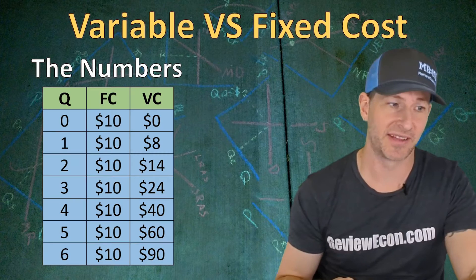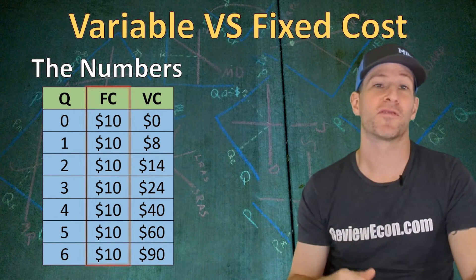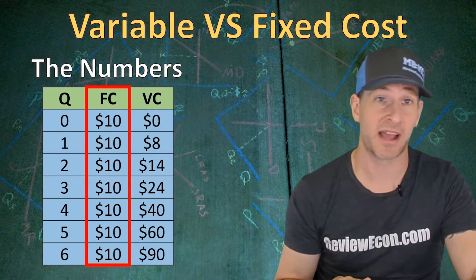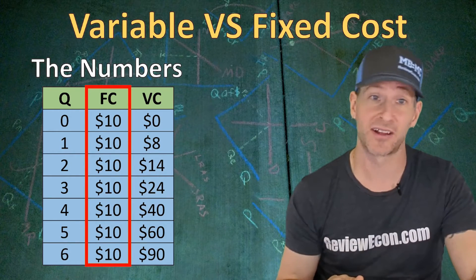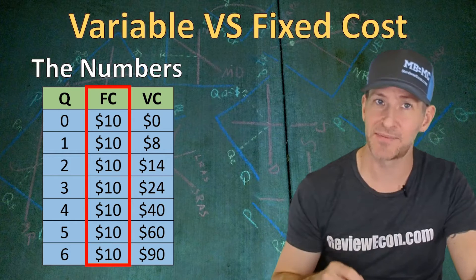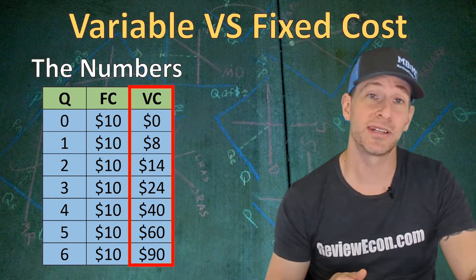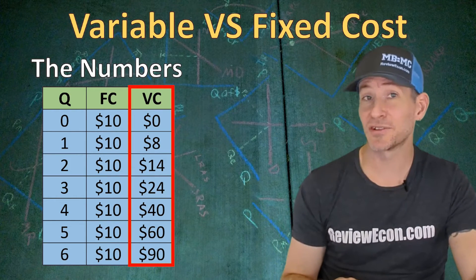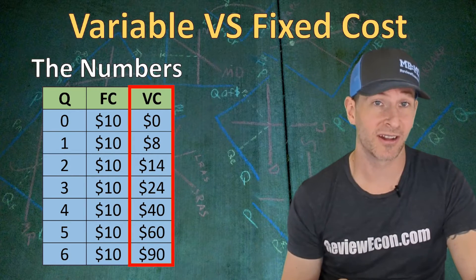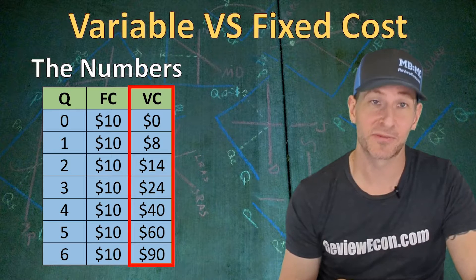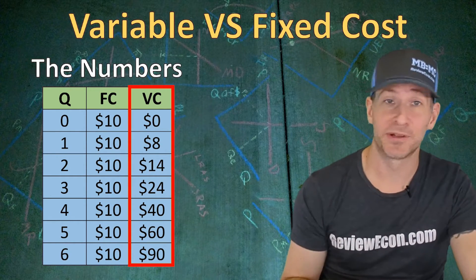Let's take a look at some numbers. Here we have different quantities of output in the Q column, and FC stands for fixed costs. You'll notice that zero units of output have a fixed cost of $10, and three units of output has a fixed cost of $10 as well. Even six units of output has the same cost of $10. But VC is the variable cost, and that is going to increase with more units produced. At zero units, we have $0 of variable cost. At three units, we have $24. And at six units, we have $90 worth of variable cost.